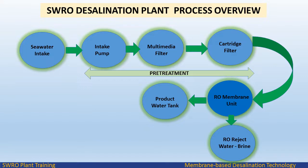The reverse osmosis system consists of trains with a design capacity. To improve the energy efficiency of the plant, an energy recovery system is installed. The pressurized water is fed to the membrane array, which is equipped with spiral wound membranes. The membranes are arranged in a single stage array for a design recovery rate of 40%. The permeate water is sent to the product water tank, and 60% of the water is rejected.